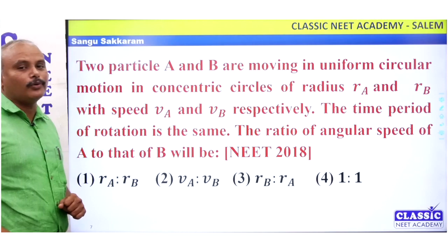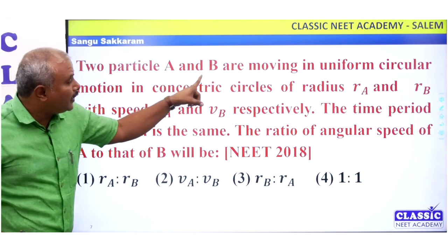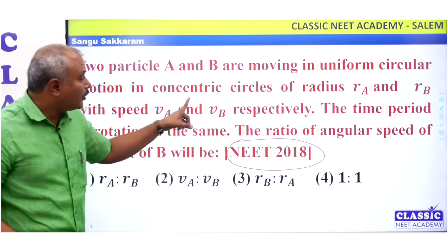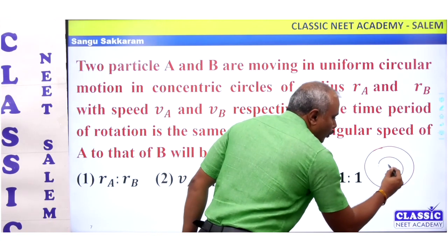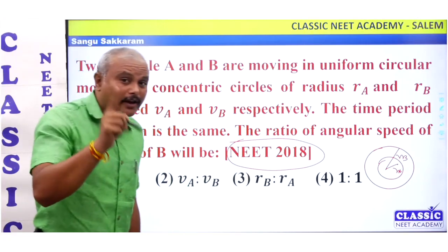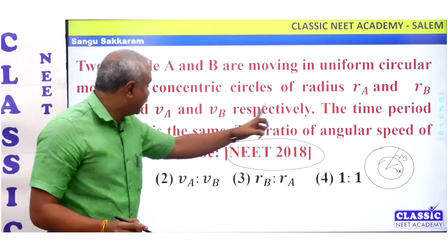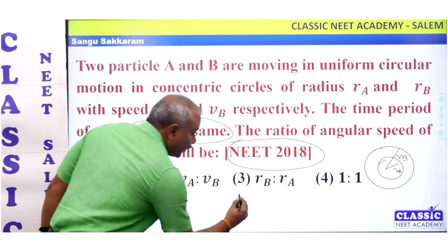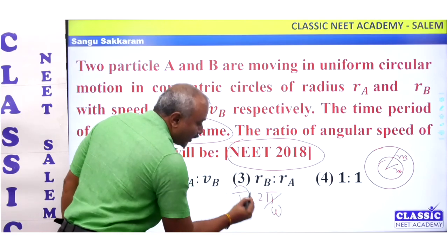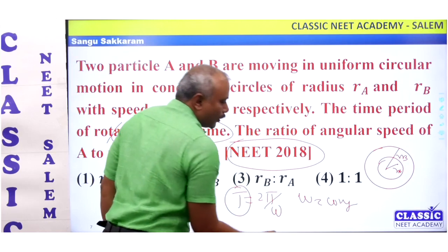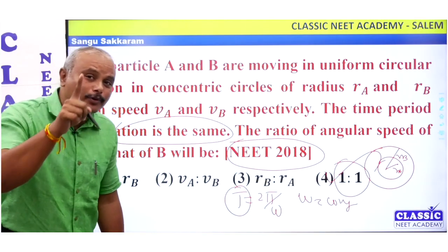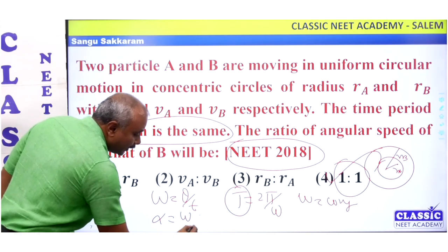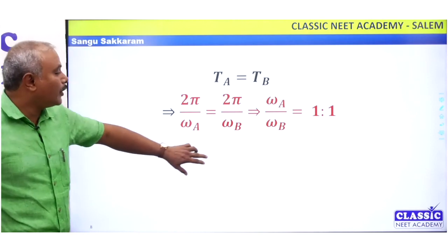If you look at the question from 2018 and 2023: two particles A and B moving in uniform circular motion in concentric circles — one radius is R_A and the other is R_B. The time period of rotation is the same. The ratio of angular speed: since time period is the same, 2 pi by omega is the same, so omega is constant — the ratio is 1 to 1. It's very easy to answer. Omega equal to theta by t, angular acceleration equal to omega by t.